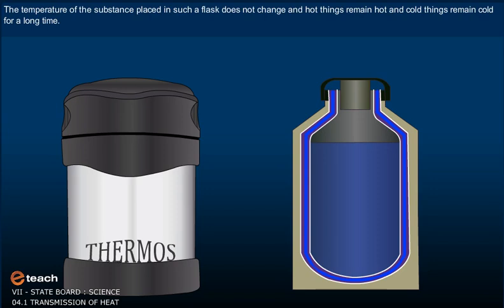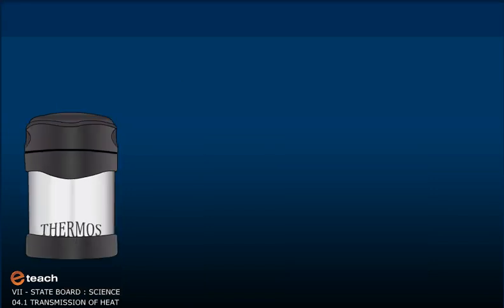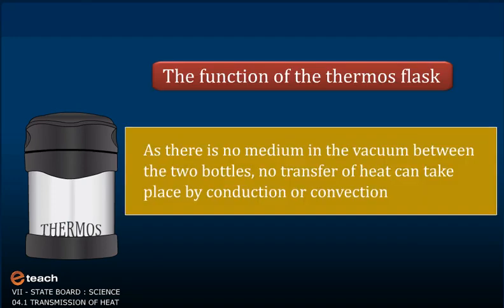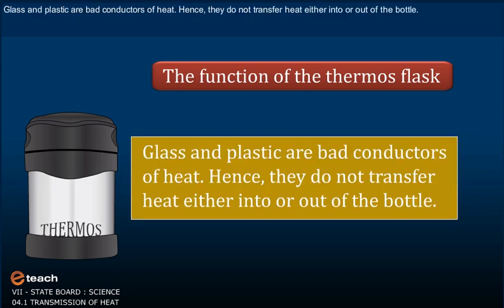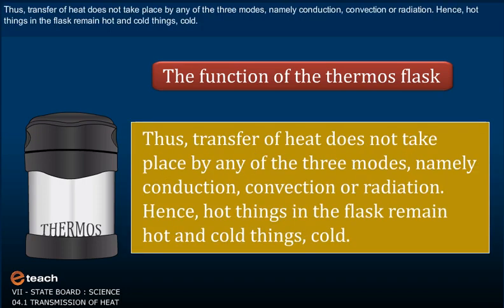The function of the thermos flask. As there is no medium in the vacuum between the two bottles, no transfer of heat can take place by conduction or convection. Radiant heat is reflected back inside from the shiny surface. Glass and plastic are bad conductors of heat. Hence, they do not transfer heat either into or out of the bottle. Thus, transfer of heat does not take place by any of the three modes, namely conduction, convection or radiation. Hence, hot things in the flask remain hot and cold things cold.